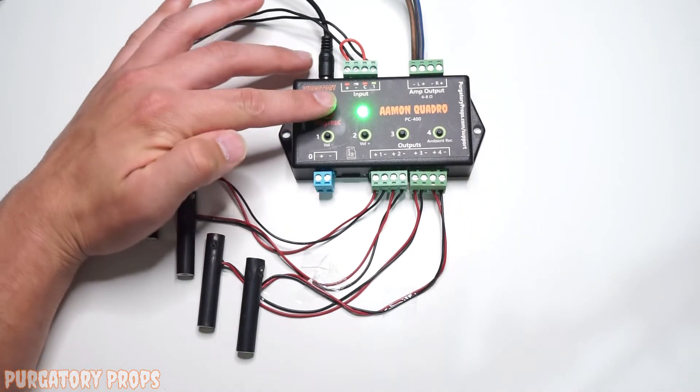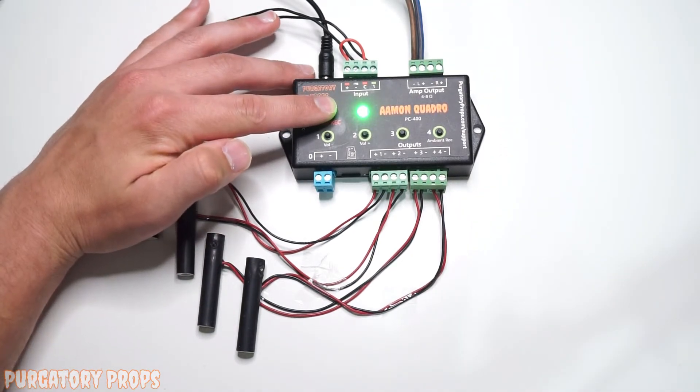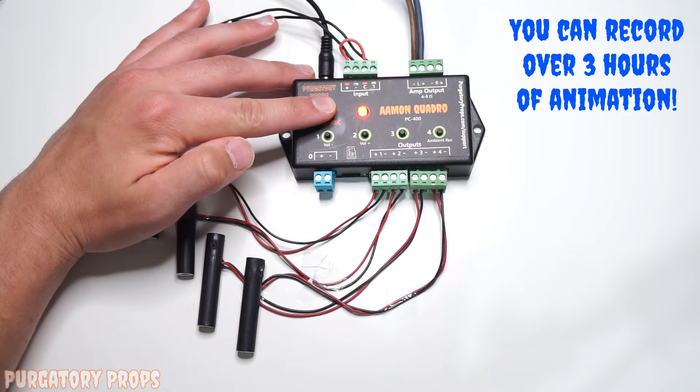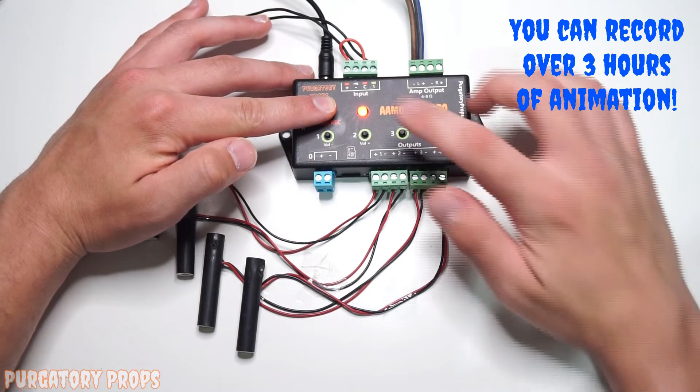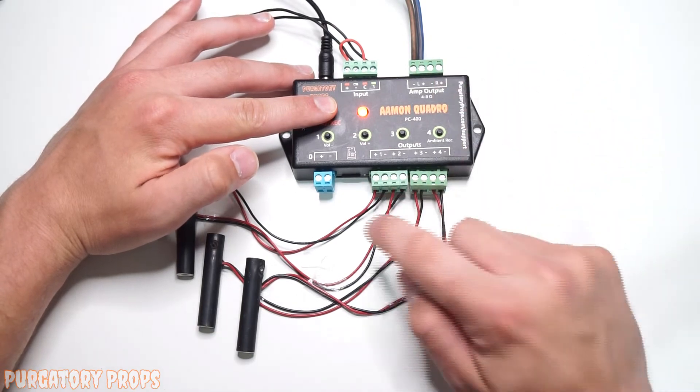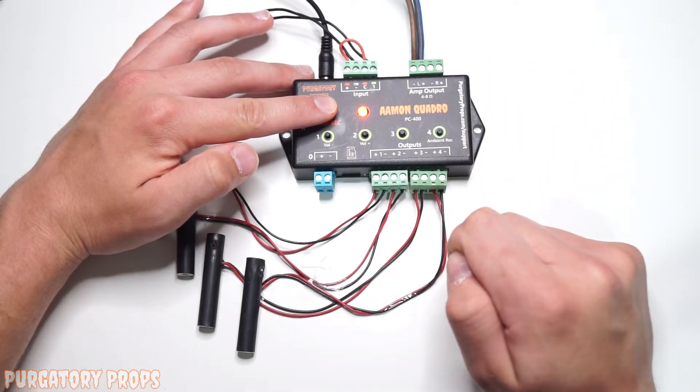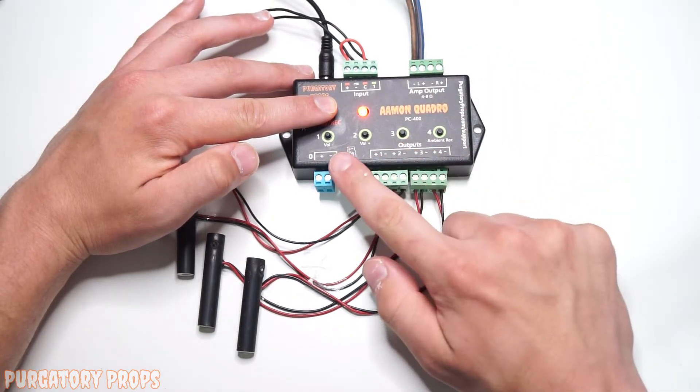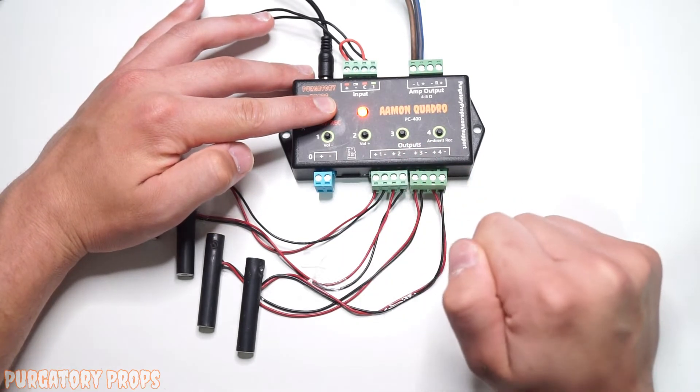To record, you just hold play record until the LED turns red, so when play record is released, it will start recording. We'll hear our sound that we have loaded onto the micro SD card, and then we can push buttons 1 through 4 to control the outputs.